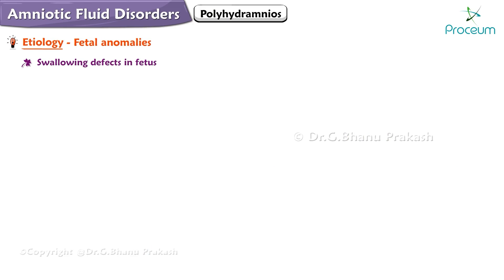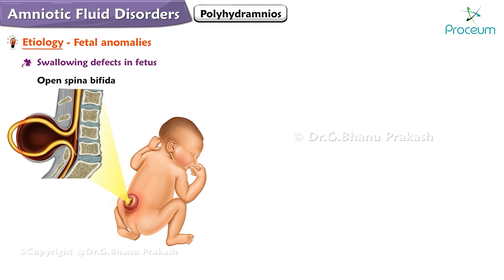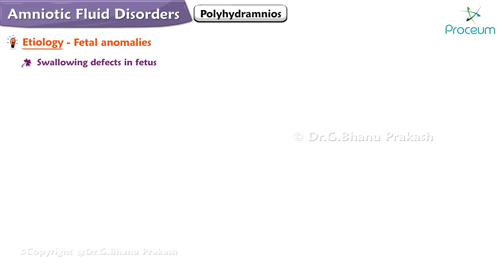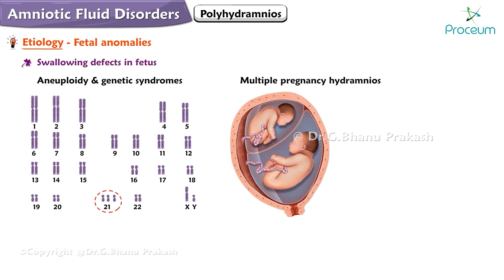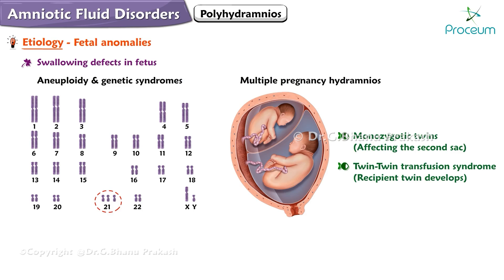Here are some other causes. Open spina bifida is associated with increased transudation from the exposed meninges. Aneuploidy and genetic syndromes also contribute. Multiple pregnancy hydramnios are more common in monozygotic twins, usually affecting the second sac. In twin-to-twin transfusion syndrome, the recipient twin develops polyhydramnios.